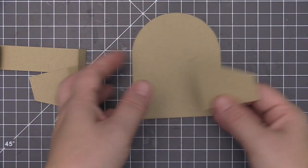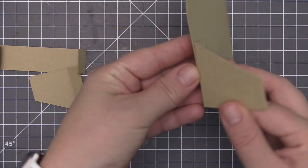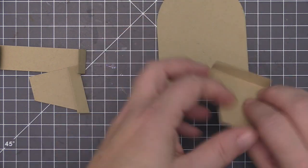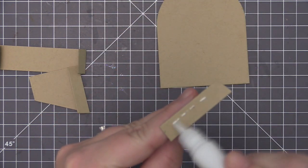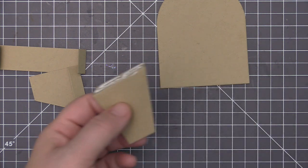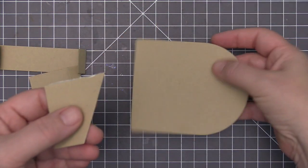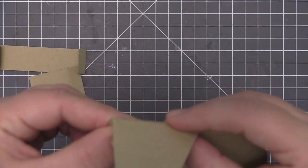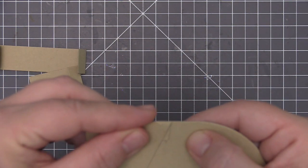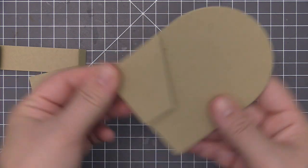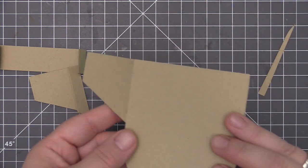This die has a really unique shape where we're going to create the side panels that kind of start taller in the back and go shorter towards the front. I always like to use liquid glue when I'm adhering my box cards just because it gives me a little bit of wiggle room.